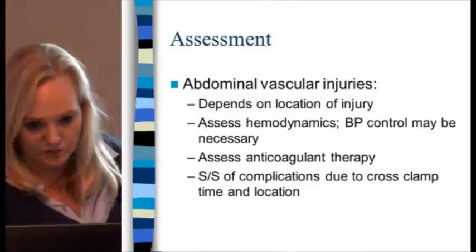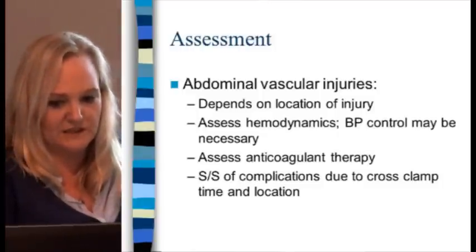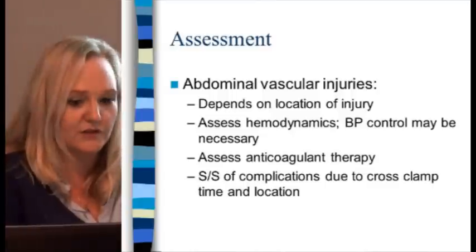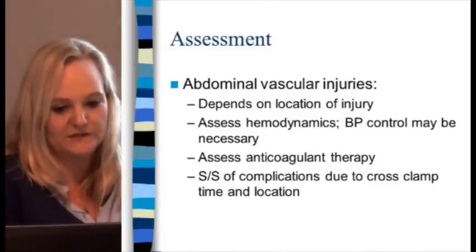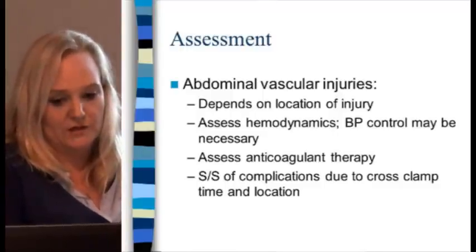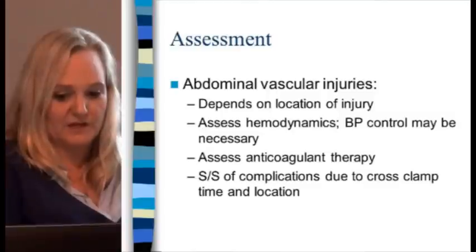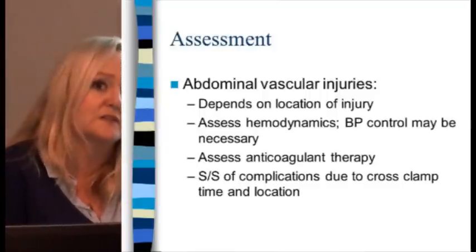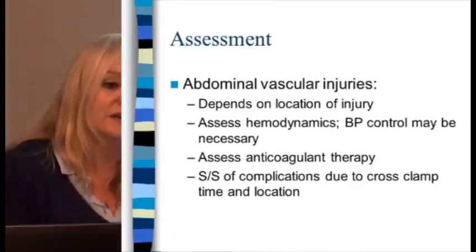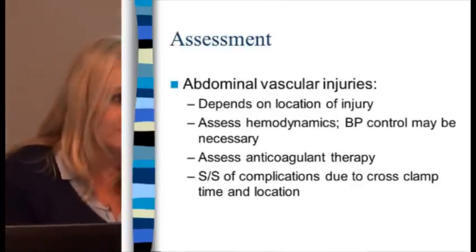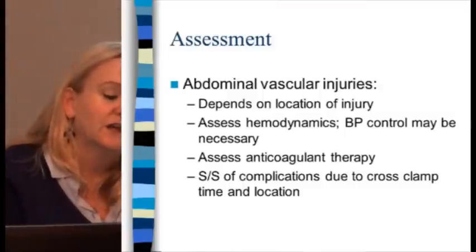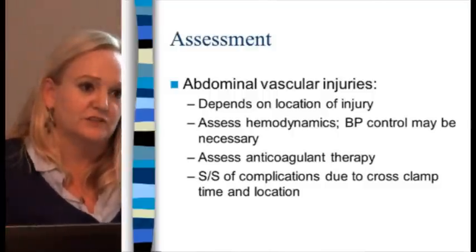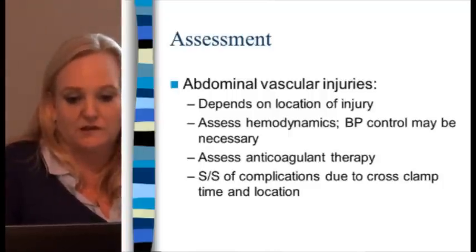Abdominal vascular injuries depend on the location. Assess hemodynamics. Blood pressure control is extremely important — we use everything to keep it within parameters, including metoprolol and hydralazine. Assess anticoagulant therapy. Signs and symptoms of complications depend on cross-clamp time and location. If they're repairing something like an aorta, it's crucial to know how long the clamp was on — if it's higher up and on for a long time, you'll have issues with vascular supply to the lower extremities and organs.